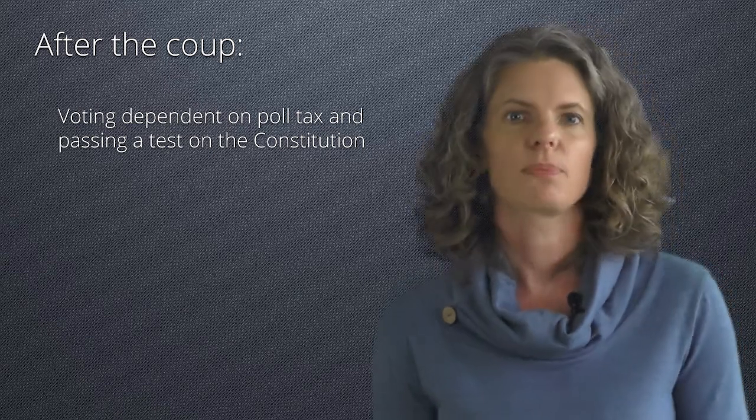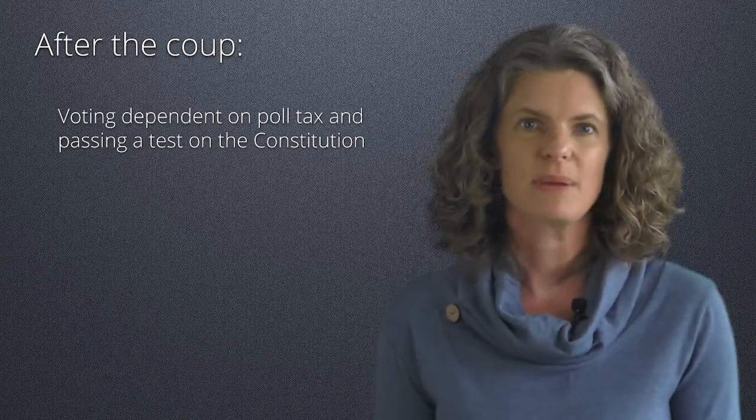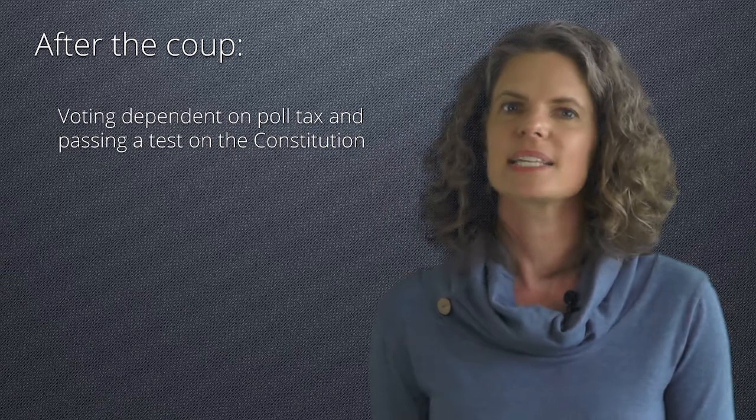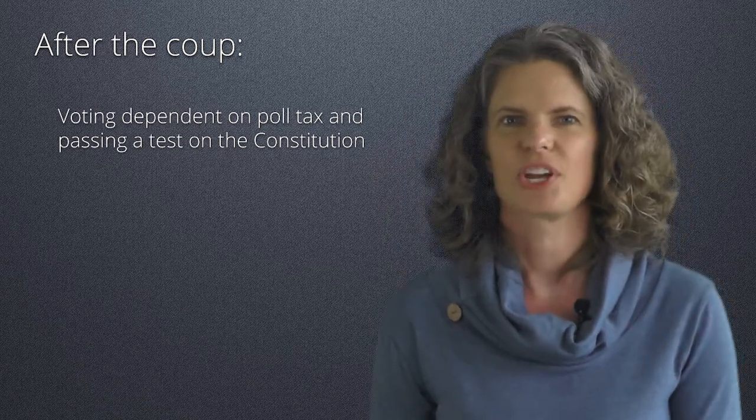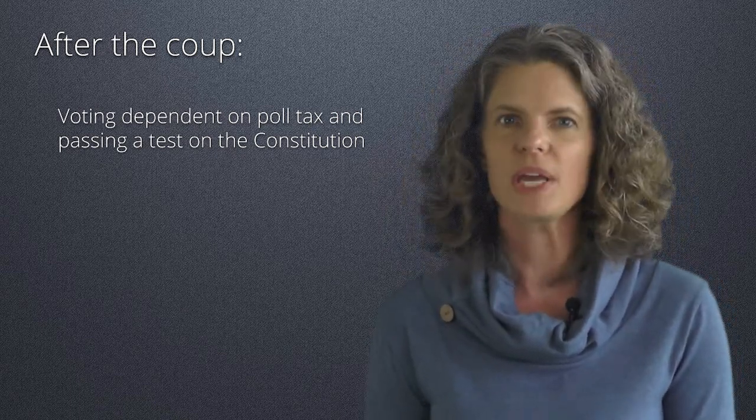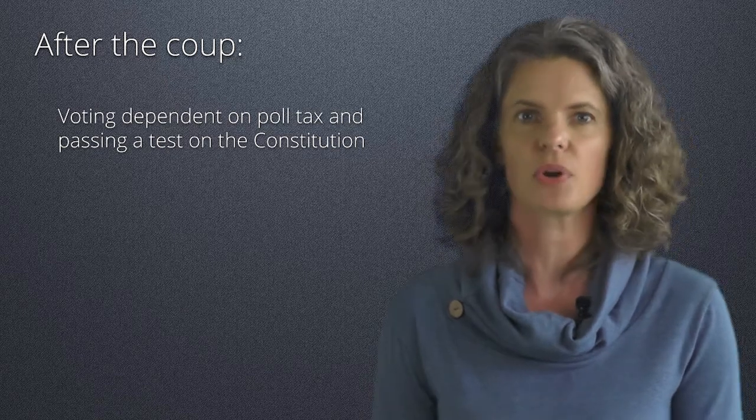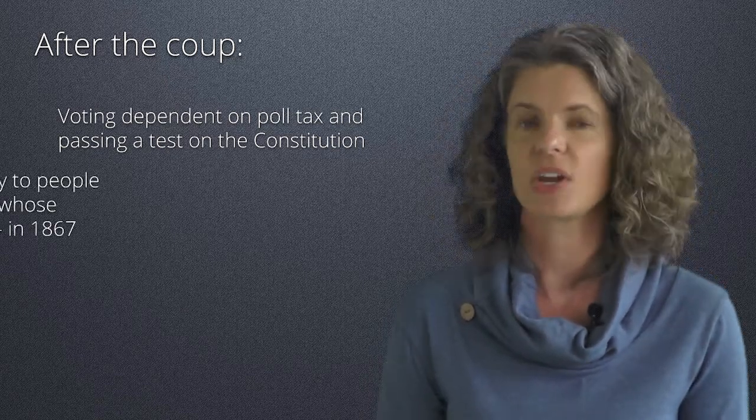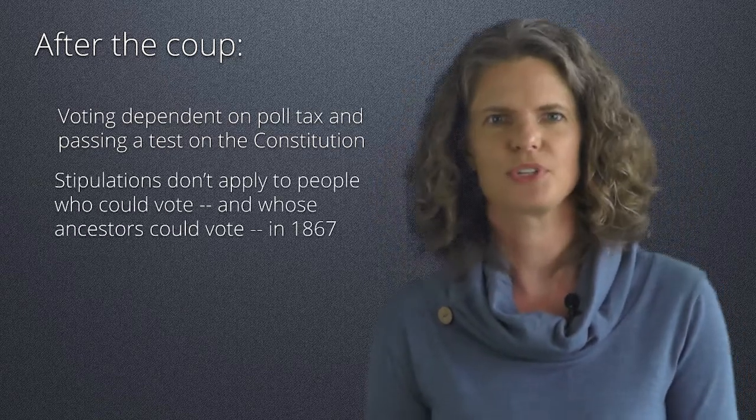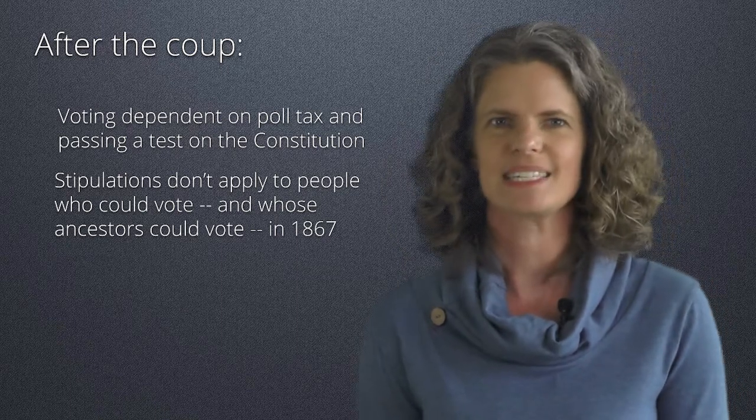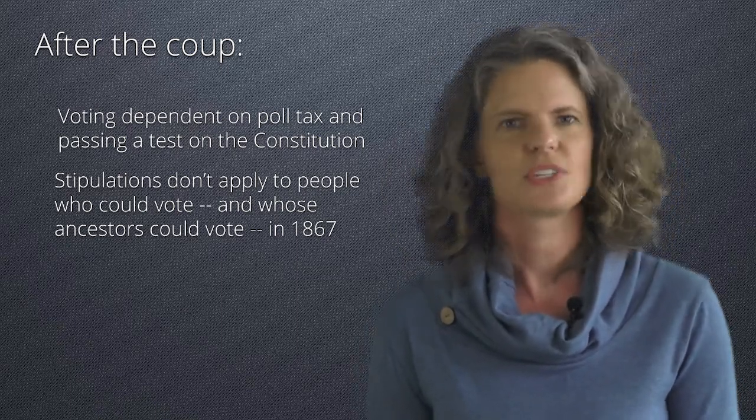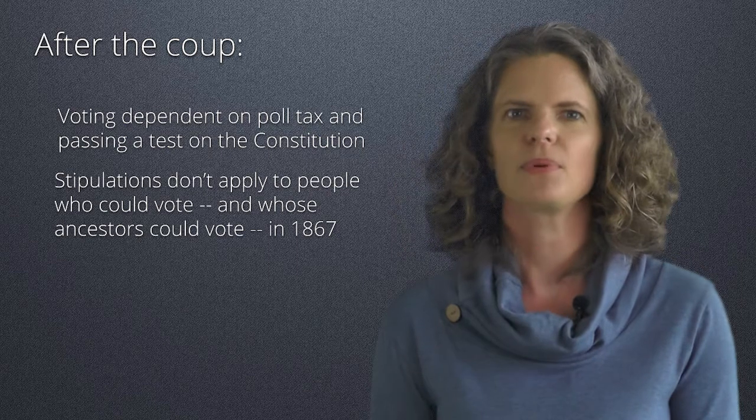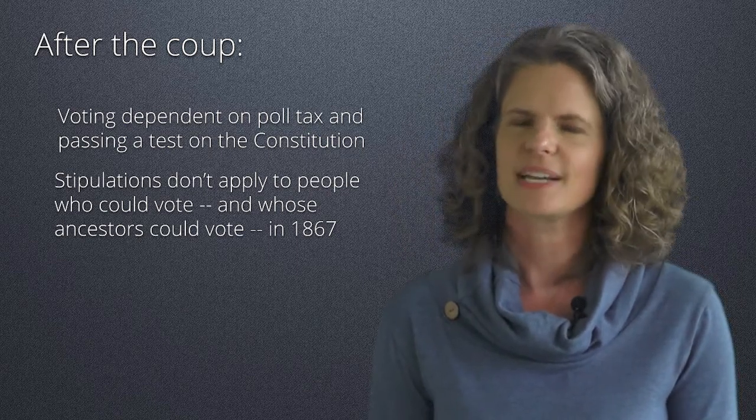Both stipulations could have hurt poor, uneducated white people as much as black people, except for another piece of the legislation which gave voting rights to all people who were legally able to vote on or before 1867 or whose ancestors were able to vote on or before 1867. As you might suspect, the Constitutional amendment giving black people the right to vote went into effect after 1867. Jim Crow had come to North Carolina.